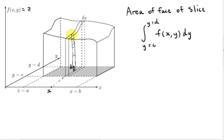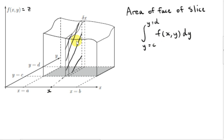The height of each rectangle is given by the value of the function at this point. The x value of this point is x — we're taking the slice at position x on the x-axis. So we're getting the value of the function at x, y at this particular point. That gives us the height of the rectangle, and we multiply by the width dy, summing all those rectangles from y equals c to y equals d. That's the area of this slice.